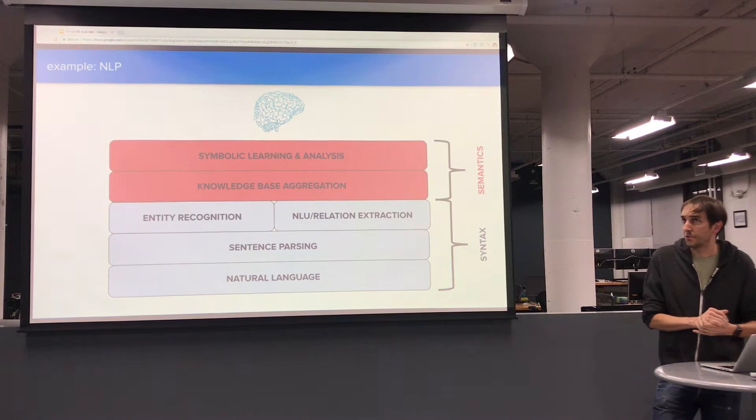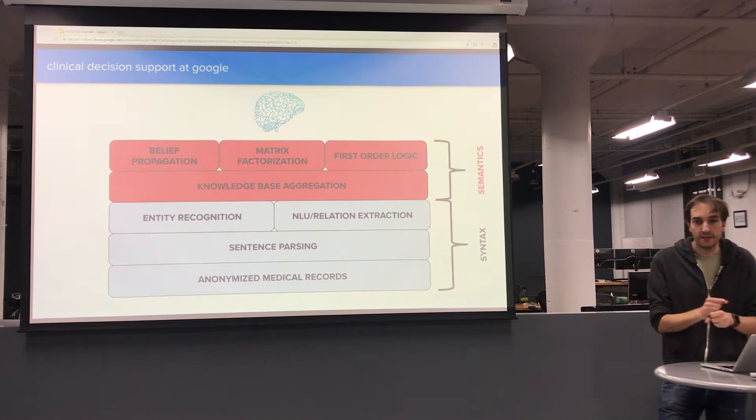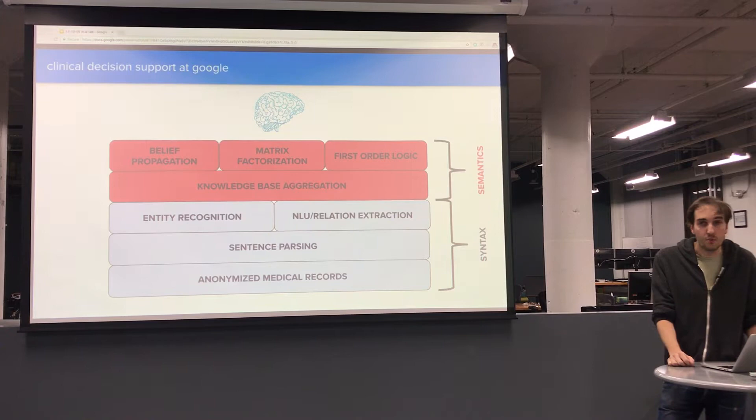It was an AI stack that was particularly interesting to Google at the time — this was 2012 — so we ended up taking it there. As soon as we arrived at Google they basically said, 'All right, looks like you guys have a hammer, let's just try to hit every nail we possibly can.' One domain we tried, the quintessential application of AI in medicine, was clinical decision support.